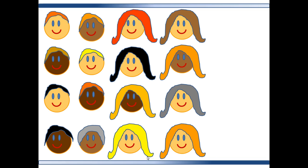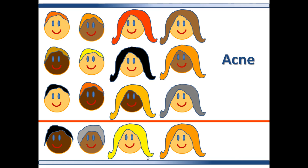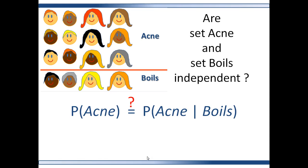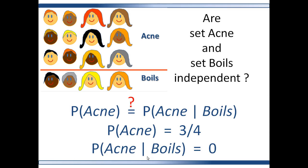Remember Acme and Boyle's Dermatology Clinic? They picked up a few more patients — here are their 16 patients, this is the clinic's outcome set. These 12 patients have acne and these four patients have Boyle's. Are the two sets acne and Boyle's independent? You need to know the probability of set acne, which is three-fourths. You also need to know the probability of set acne given Boyle's, which is zero.